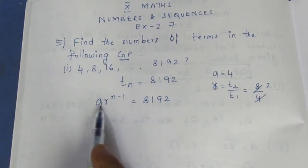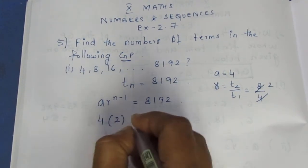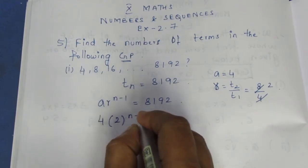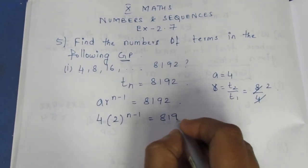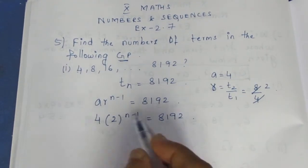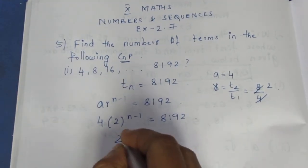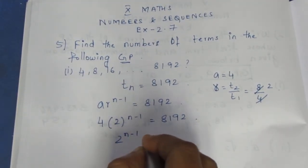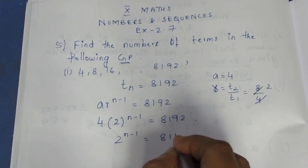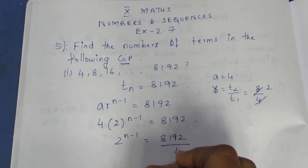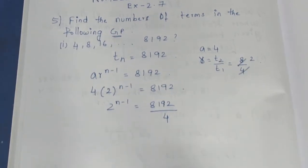Substitute into the Tn formula: a times r to the power n minus 1 equals 8192. So 4 times 2 to the power n minus 1 equals 8192. Dividing both sides by 4: 2 to the power n minus 1 equals 8192 divided by 4.